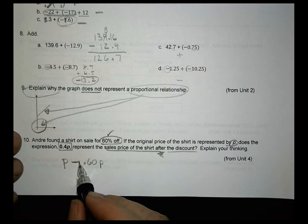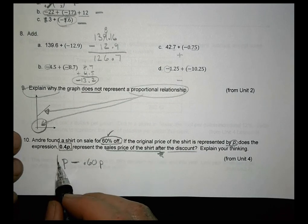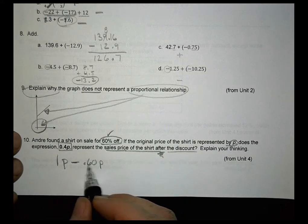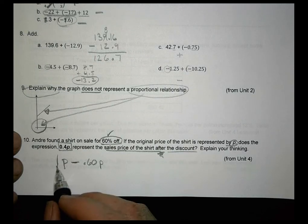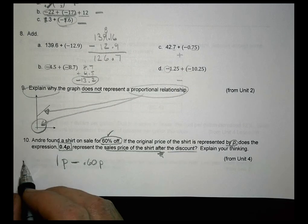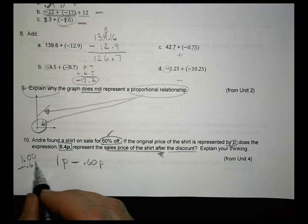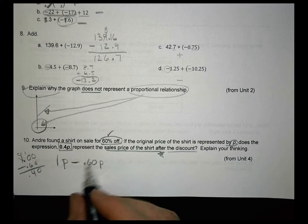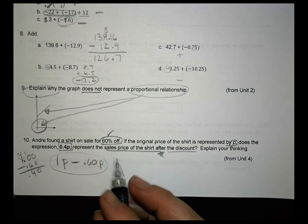But we could also put a 1 in front of here to represent the whole price. Now knowing what we know about variables and combining like terms, we can do 1 minus 0.6. And what is 1 minus 0.6? Well, let's do this right here. 1 minus 0.60. We have to borrow here. 10 minus 6 is 4. And we have 0.4. So when I do 1P minus 0.60P, I end up with 0.40P.